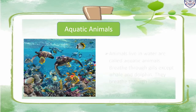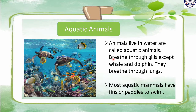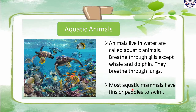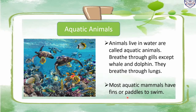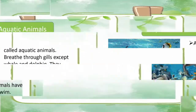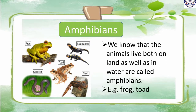Aquatic animals: animals that live in water are called aquatic animals. Amphibians: animals that live both on land as well as in water are called amphibians. For example, frog and toad. The back legs of frogs and toads are stronger than the front legs, which help them to jump and move on land, and their webbed feet help them to swim in water.